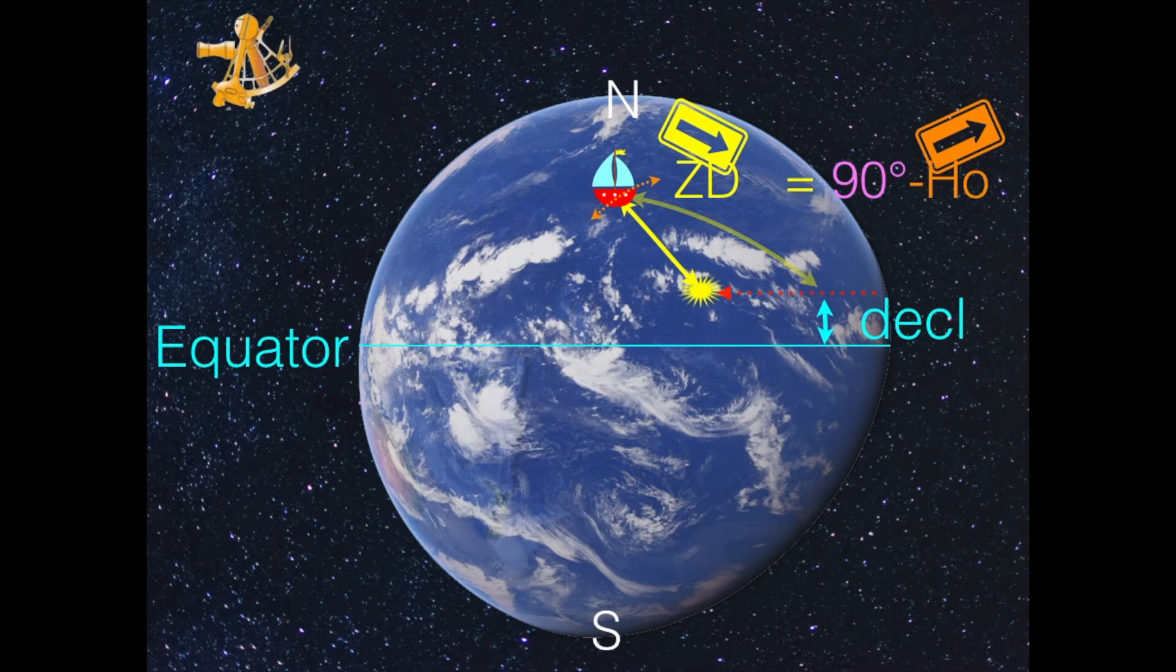And so the equation ZD equals 90 degrees minus HO remains valid. You have to increase the angle on the sextant if you decrease the zenith distance and vice versa.